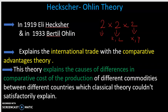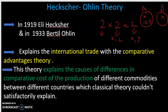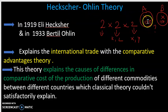Traditional economists considered two countries as commodity producers and observed a difference in the cost of production. Country A and country B both produce commodity X, but the same commodity costs differently. The traditional economist couldn't give a satisfactory explanation, so modern economists Heckscher and Ohlin provided the first satisfactory explanation.